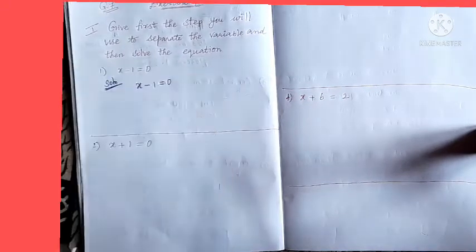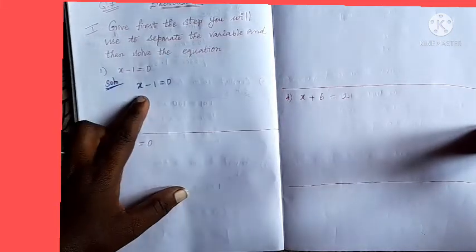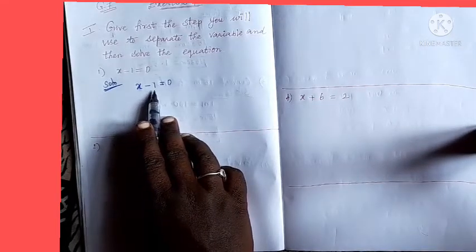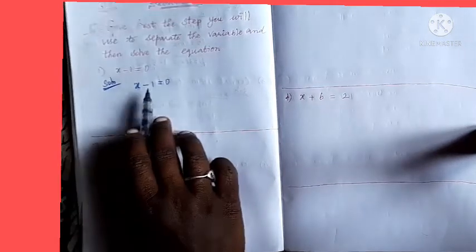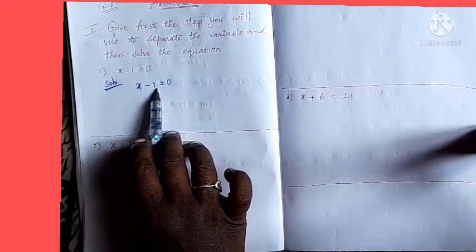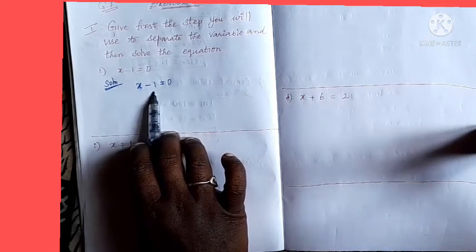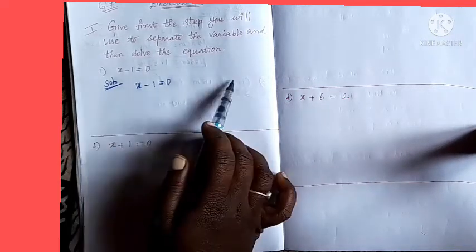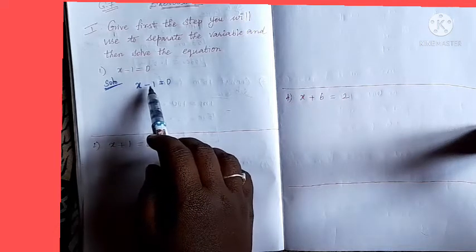So here, the first step: x minus 1 equal to 0. Write the question as given. You need to use a step to separate the variable. Here minus 1 is given, so we need to simplify it so minus 1 gets cancelled and becomes 0. Take the opposite sign: minus 1 means plus 1, minus 2 means plus 2, plus 3 means minus 3. Whatever number is given, take the opposite sign.